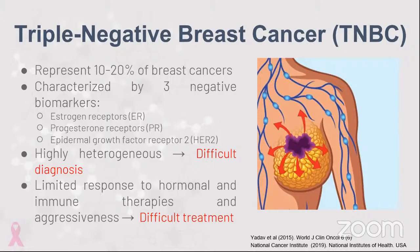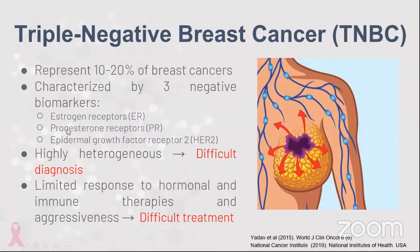Just to have some context about triple-negative breast cancer: it represents 10 to 20% of breast cancers. However, it is highly heterogeneous, so it's difficult to diagnose — there are several subtypes. The main characteristic is that these breast cancers have negative response to estrogen receptors, progesterone receptors, and epidermal growth factor receptor.